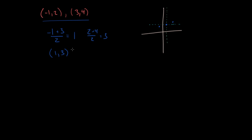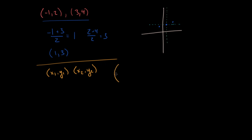We can generalize this: given two points x1, y1 and x2, y2, the midpoint — the point exactly halfway between them — is the average of the x-coordinates and the average of the y-coordinates. I'm generally not going to memorize a formula; I'll just think about what's going on. This average gives me the point exactly halfway between the two values.